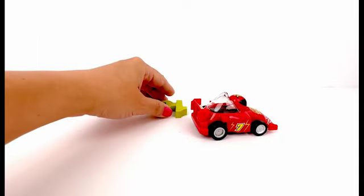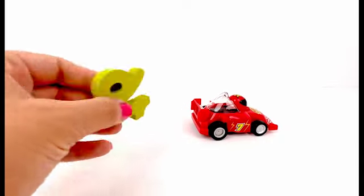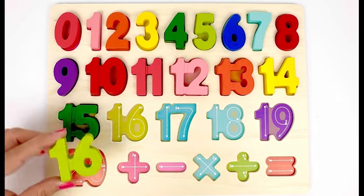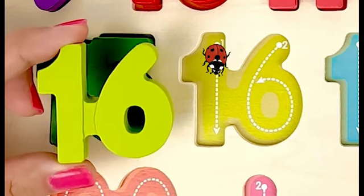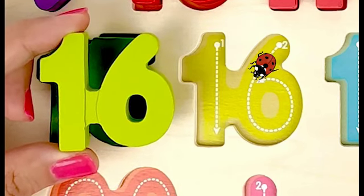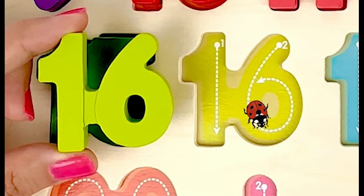A red racing car. Oh, it looks like there's something behind it. It's number 16. Number 16 is made of number one and number six. Trace it with the ladybug.